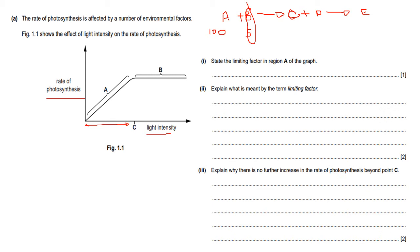The last part asks: explain why there is no further increase in rate of photosynthesis beyond point C. Even though light intensity is increasing, the rate reaches a plateau. This tells us light intensity is no longer the limiting factor — something else, perhaps carbon dioxide concentration or temperature, is now limiting the reaction. Give an example such as carbon dioxide or temperature to get the full two marks.